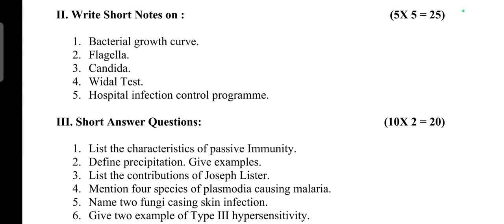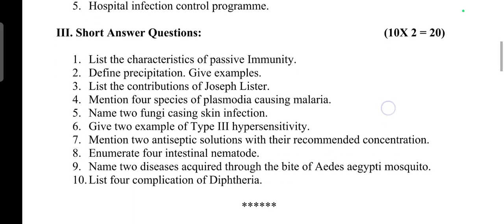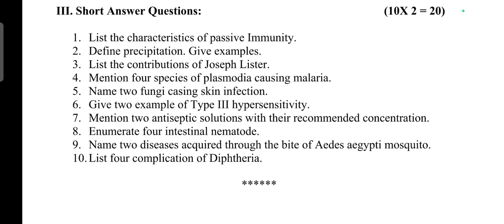Short answer questions worth 25 marks: bacteria growth curve, Flexner-Castellani test, hospital infection control program. Next: characteristics of passive immunity, different types of precipitation with examples, and contributions of Joseph Lister.